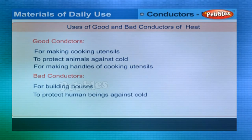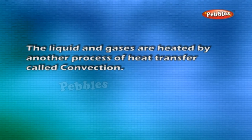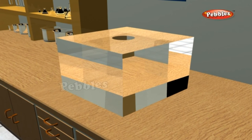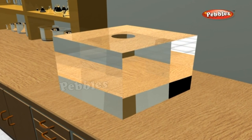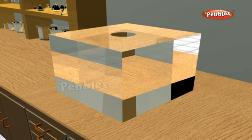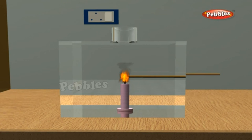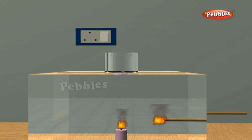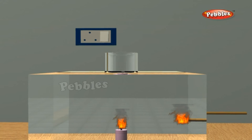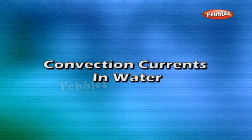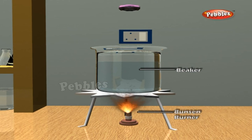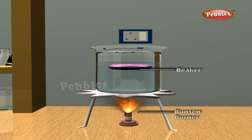Convection: liquids and gases are heated by convection. In a demonstration using a glass box with two holes, smoke is produced at the side hole. The smoke enters through the side hole and rises through the top hole — hot air rises upward, demonstrating convection currents.